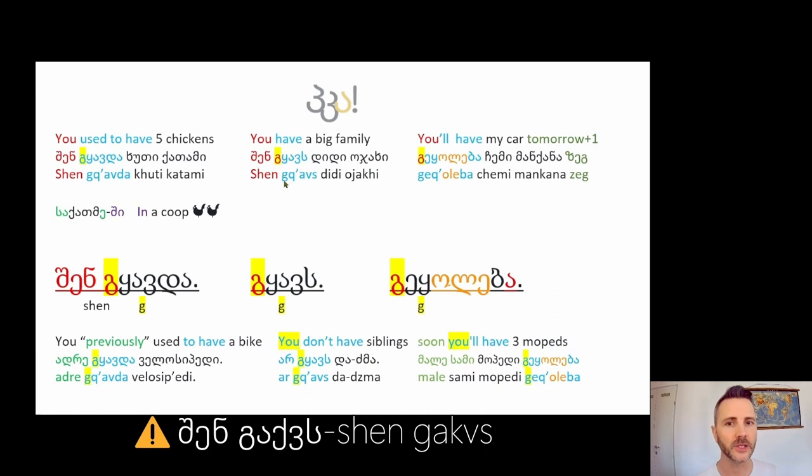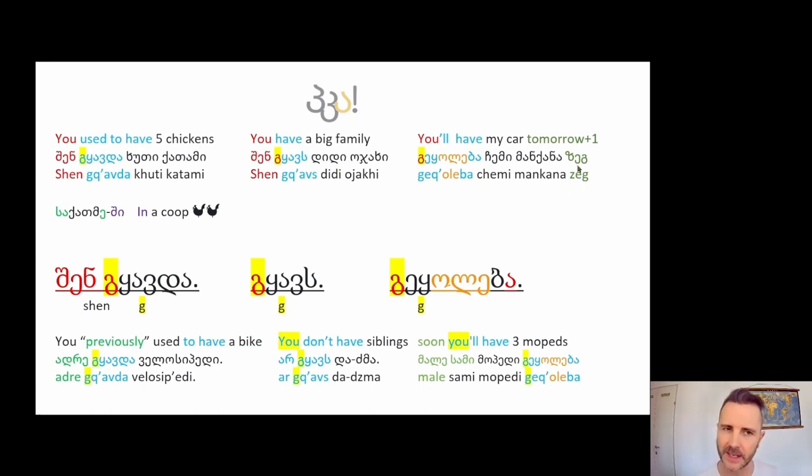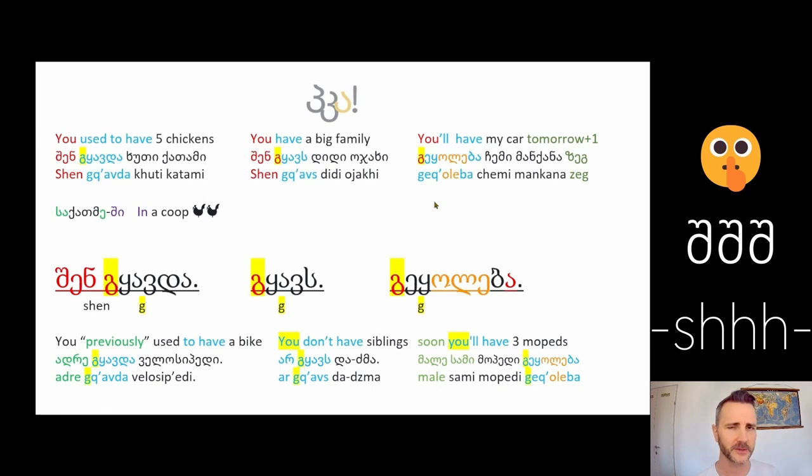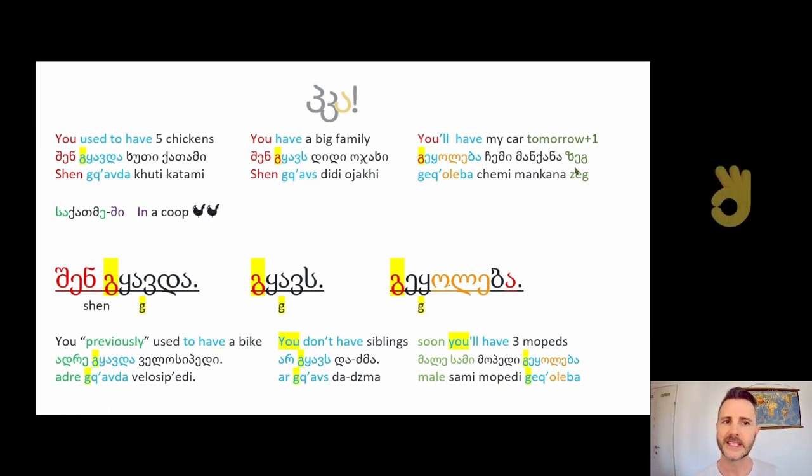You have a big family. In the future Dzeg. Dzeg is a word used in Georgian for the day after tomorrow. It's in two days time so I wrote here tomorrow plus one. There's a bit of a debate that Dzeg comes from an Armenian origin. I strongly advise for you not to bring that up. Dzeg is a Georgian word that means the day after tomorrow. Shen Gech oleba chemimankana Dzeg. You are going to have my car in two days time.